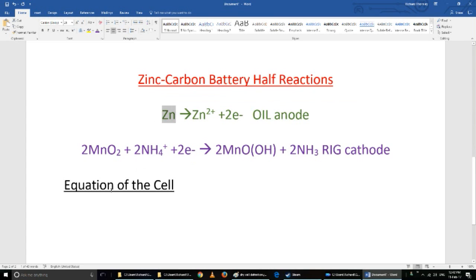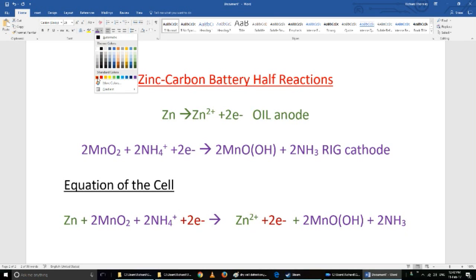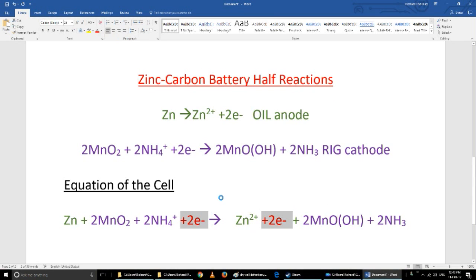Now let me take all of the reactants and put them on one side and all of the products and put them on the other side. This gives me the equation for the cell. Now what appears on both sides and therefore can be cancelled is those two electrons, so I'm going to remove those and just quickly double check—are the charges balanced, are the atoms balanced? Yes.